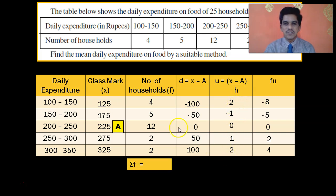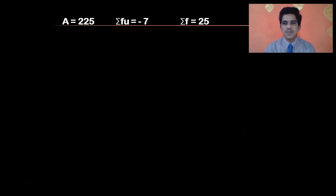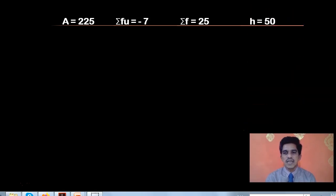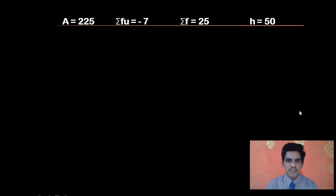Next, we have to multiply f with u to get fu. 4 times minus 2 is minus 8. 5 times minus 1 is minus 5. 12 times 0 is 0. 2 times 1 is 2. Again, 2 times 2 is 4. Then you have to add sigma f which is 25. Then, you have to add fu also. First, let us find the sum of negative values, minus 13. The sum of positive values is 6. Minus 13 and 6 will give you minus 7. So, sigma fu is minus 7.